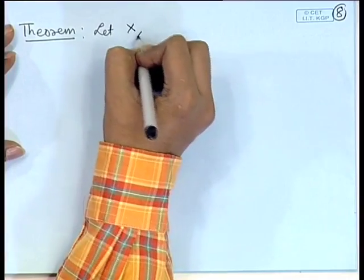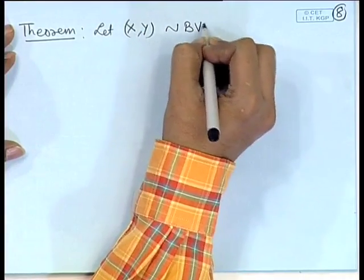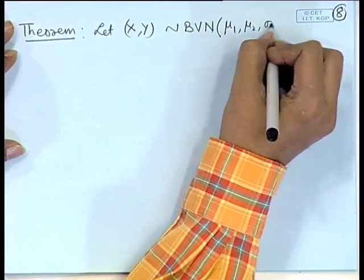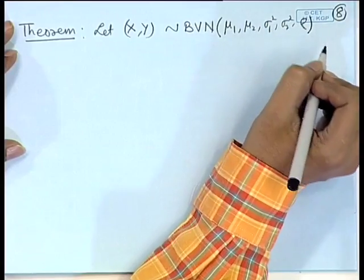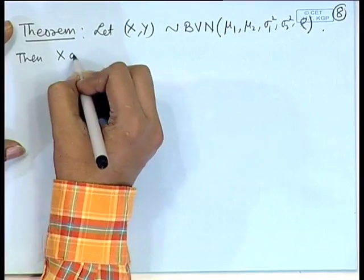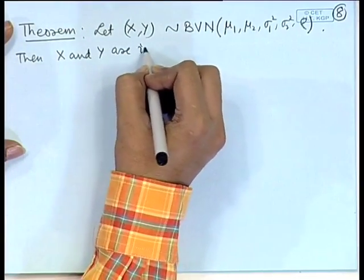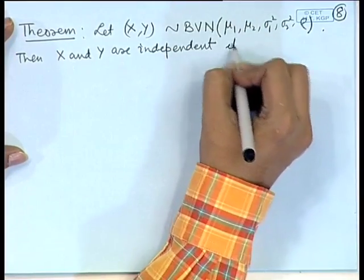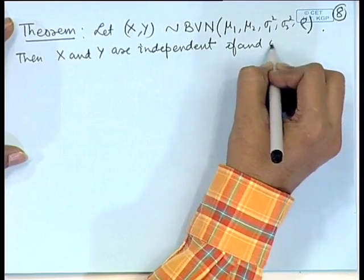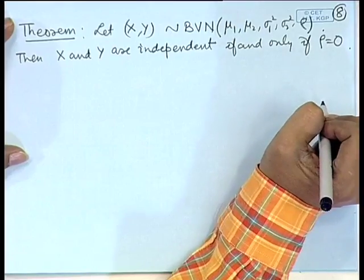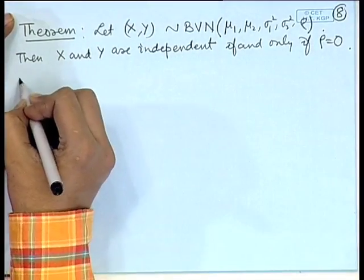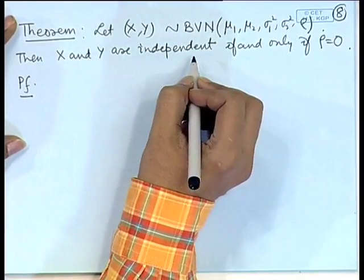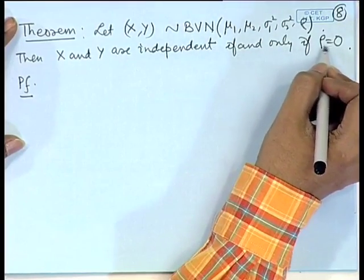Let X, Y follow a bivariate normal distribution with parameters mu_1, mu_2, sigma_1 squared, sigma_2 squared, and rho. Then X and Y are independent if and only if rho is equal to 0. We already know that if X and Y are independent then the correlation is 0, so rho equal to 0 will be true.